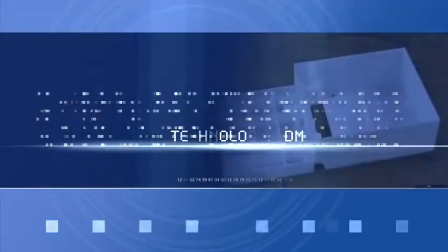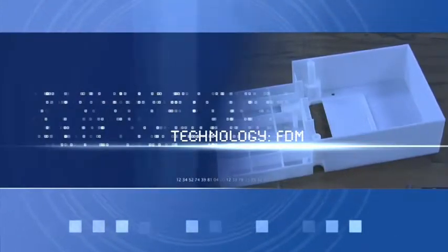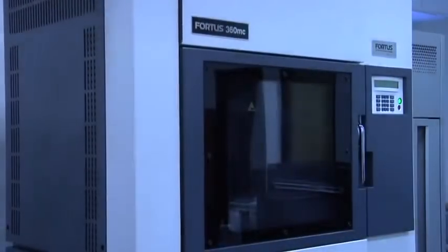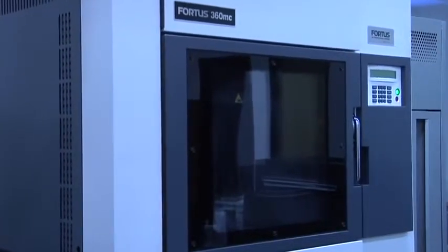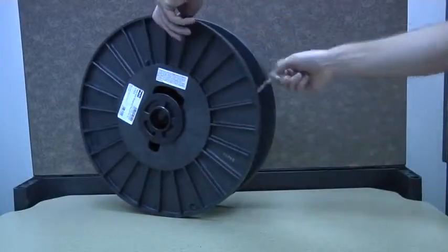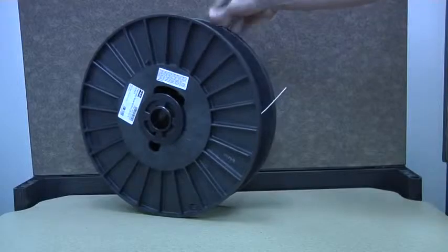Welcome back to episode 2 of our series on additive manufacturing and rapid prototyping. Today's topic is fused deposition modeling. FDM works as such: you have a spool of material which is then melted and extruded through a tiny nozzle. Your material options are ABS plastic, a blend of polycarbonate and ABS, and pure polycarbonate.